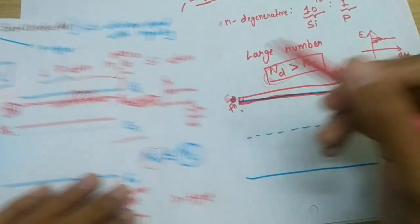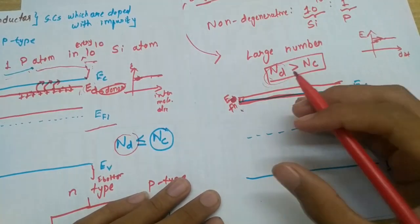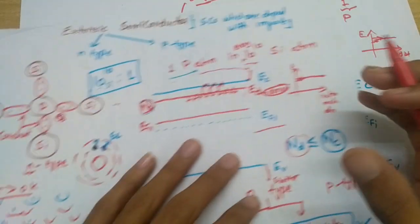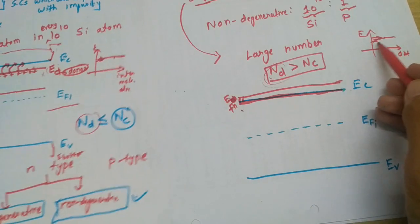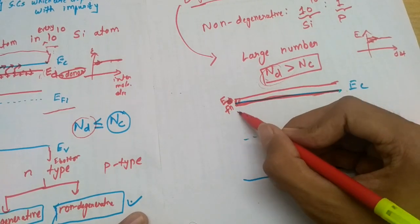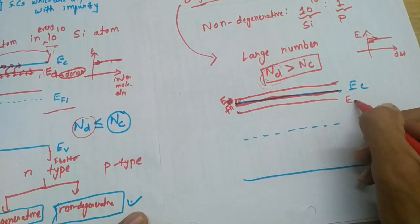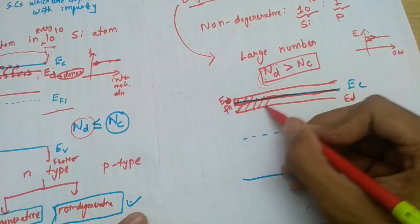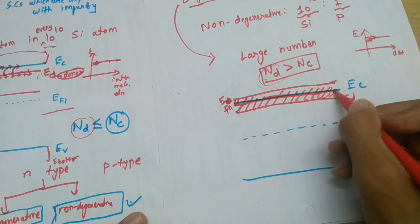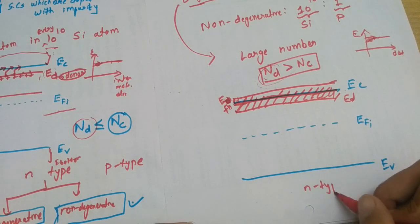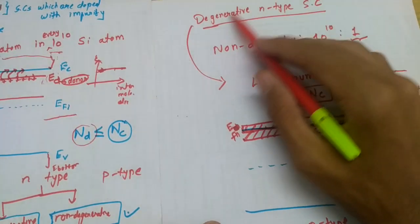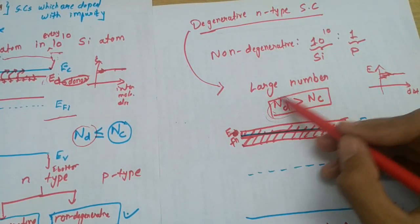This ED, which was here, which was just a discrete level, a single line, it is not a band, it was a discrete energy level. But due to the nearness, due to large number of phosphorus atoms, different kinds of forces will be acting and due to that splitting of bands will take place. This ED will also get splitted and will get merged. This will be the change in the energy band diagram of n-type semiconductor in case of degenerative doping.